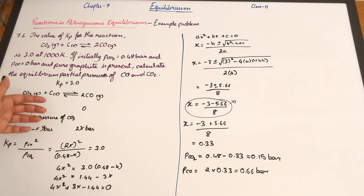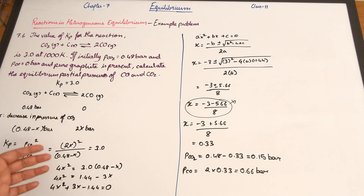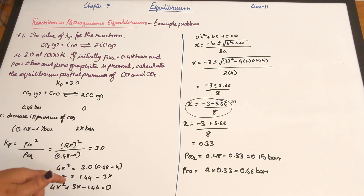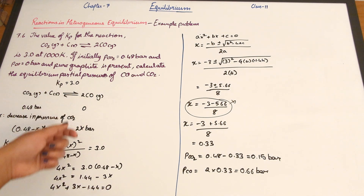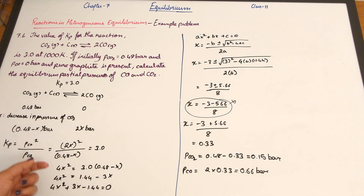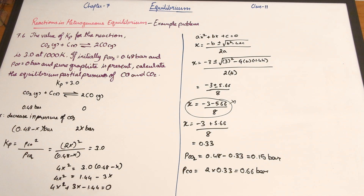Another difference was that in question 7.4 all stoichiometric coefficients were one, so it was straightforward, but here we had a stoichiometric coefficient of two for carbon monoxide which had to be considered. With that we're done with reactions and heterogeneous equilibrium. In the next video I'll be discussing the units of Kp and Kc.